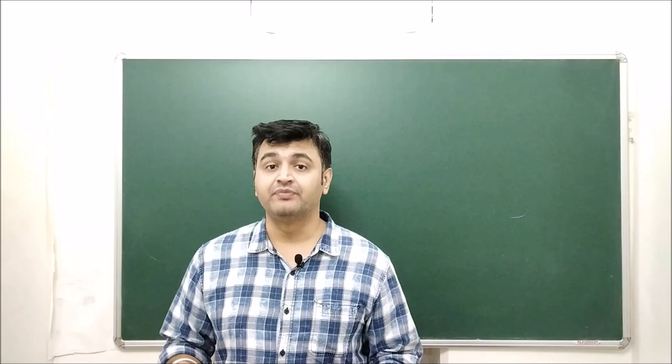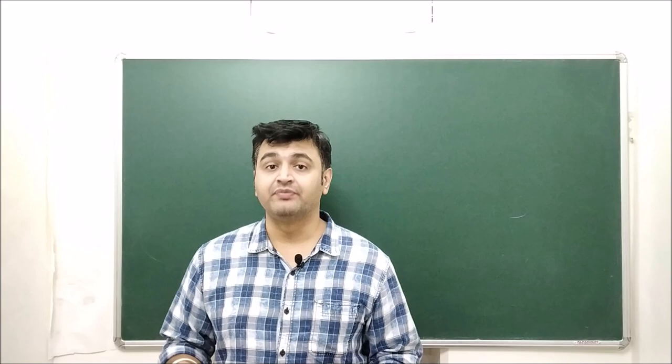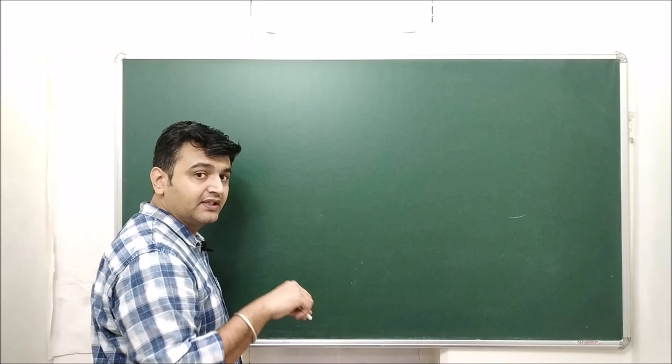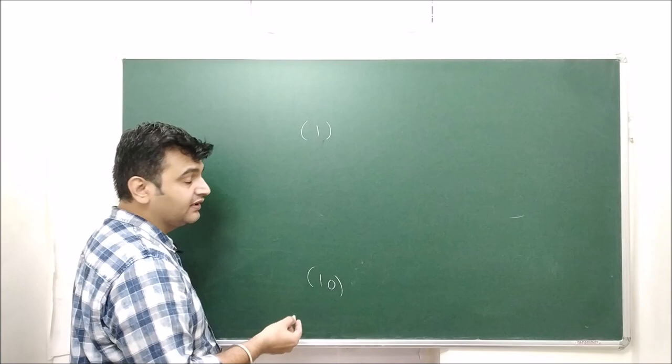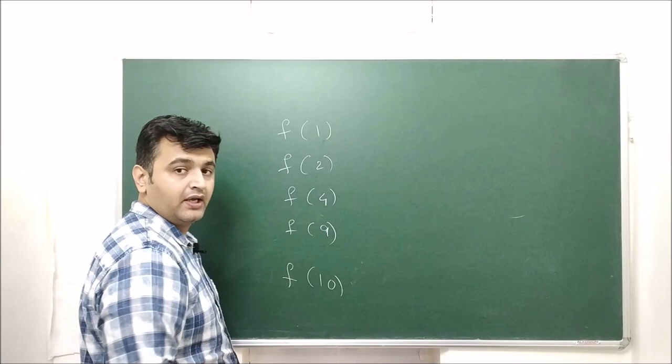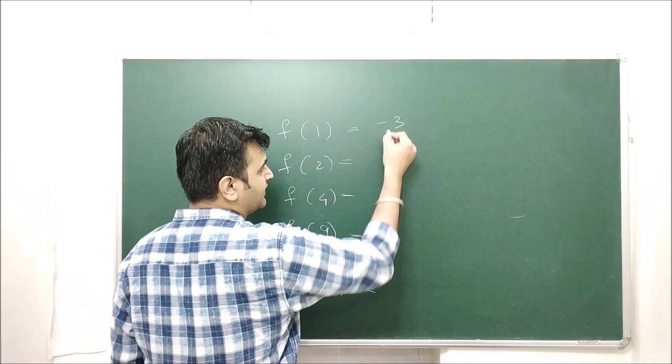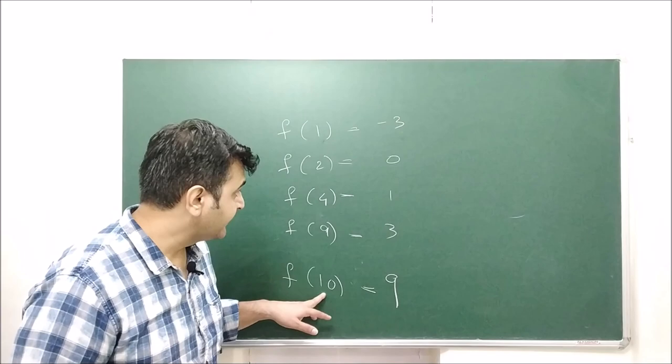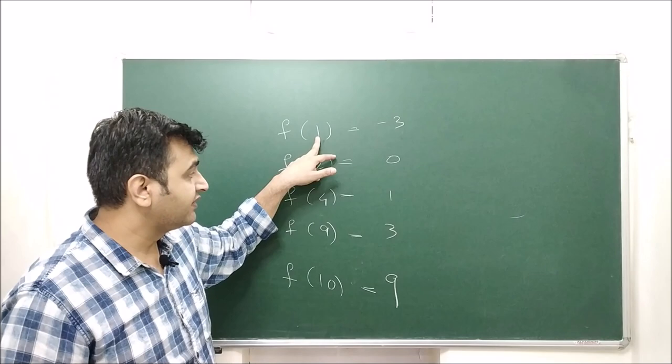Till now we know how to find absolute maximum and absolute minimum. You find the critical points and the endpoints. Suppose the endpoints are 1 and 10, and the critical points are 2, 4, and 9. You find the values of the function at all these points — say you get minus 3, 0, 1, 3, 9 — and then you can say the absolute maximum is 9 at x=10 and the absolute minimum is minus 3 at x=1.